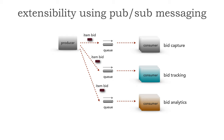And this just continues on and on. When we talk about extensibility, we're talking about multiple uses of this kind of data. Notice what's required in point-to-point messaging using queues: not only do we have to modify our topology to continue to add new queues, but also every time we want to extend that functionality, we have to modify the producer to do this.